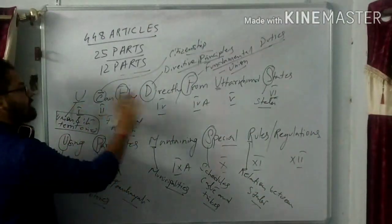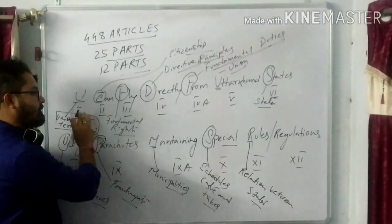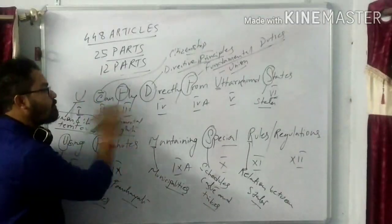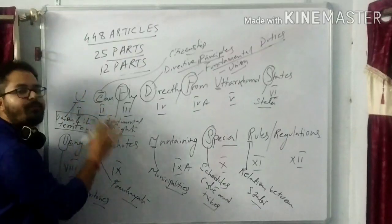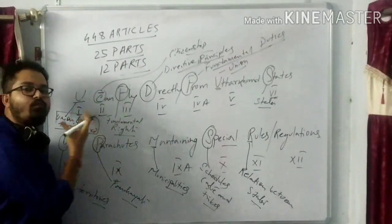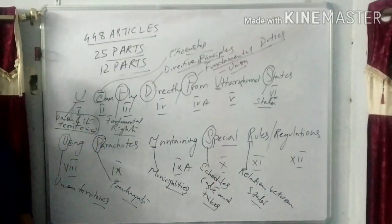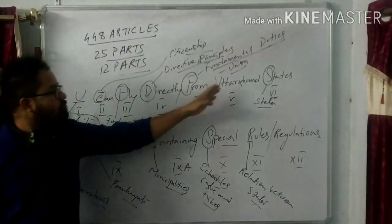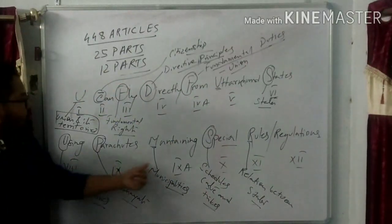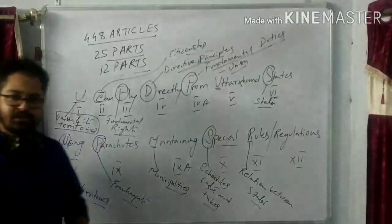So this is the sentence and these are the words with the help of which you will be able to denote the 12 parts. And those 12 parts will contain articles of what topic you will get to know: You can fly directly from Uttarakhand states using parachutes maintaining special rules and regulations.